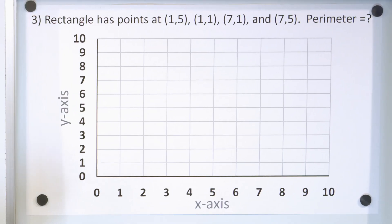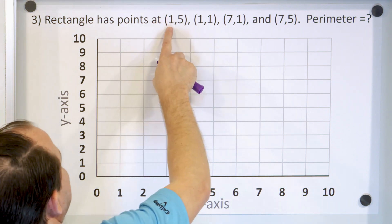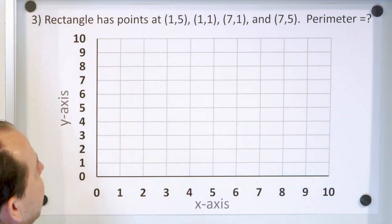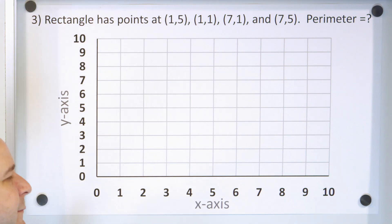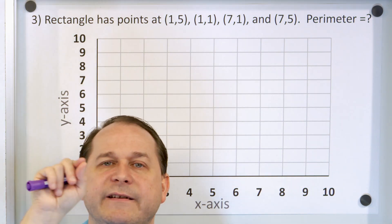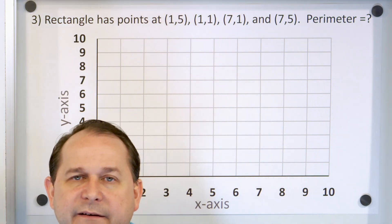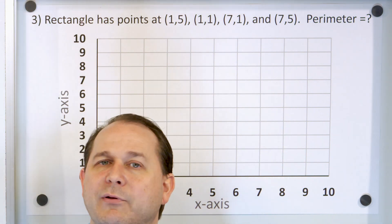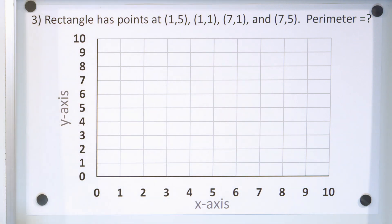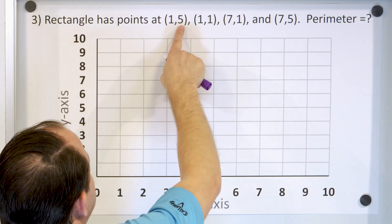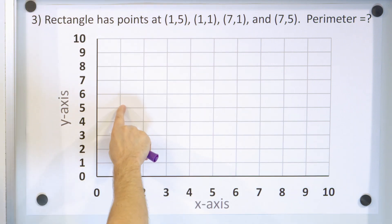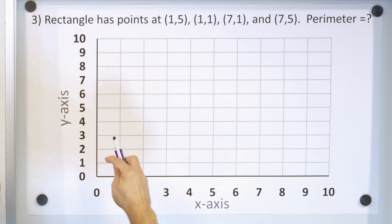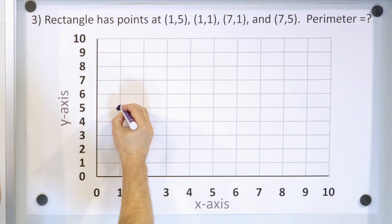Problem number three: a rectangle has points 1,5 — 1,1 — 7,1 — 7,5. What is the perimeter? Remember, perimeter is the distance all the way around the object — you just add up the distance of all the sides. First we have to plot these points. Rectangle: 1,5 means X is 1 and Y is 5. So here is one corner of the rectangle.